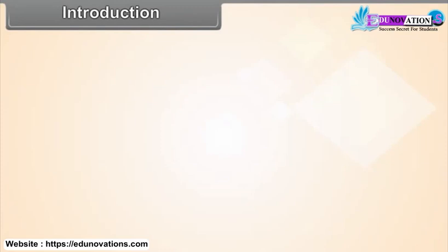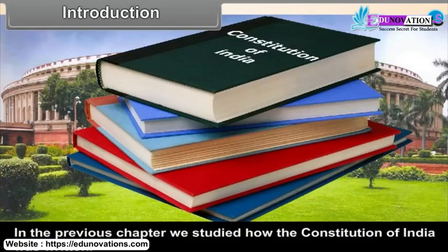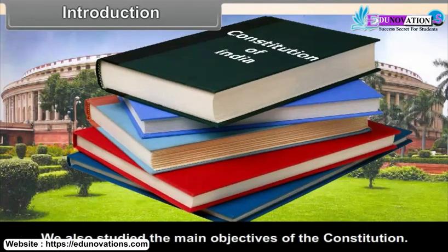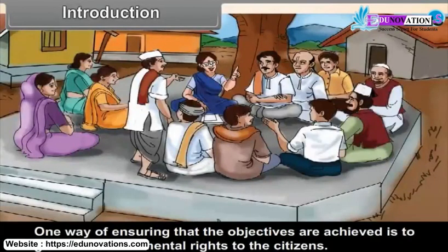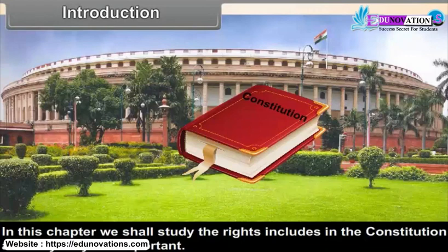Chapter 6: Fundamental Rights and Duties. In the previous chapter, we studied how the Constitution of India was written. We also studied the main objectives of the Constitution. One way of ensuring that the objectives are achieved is to guarantee fundamental rights to the citizens. In this chapter, we shall study the rights included in the Constitution and why they are important.